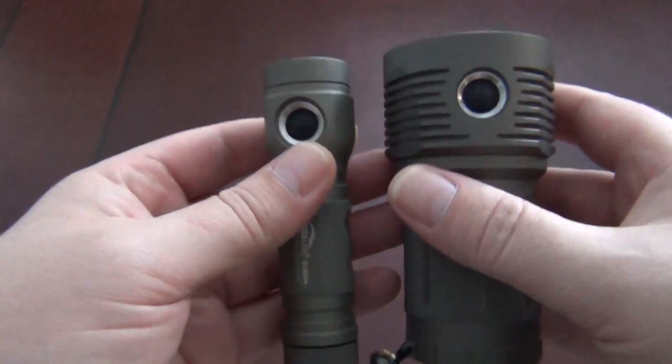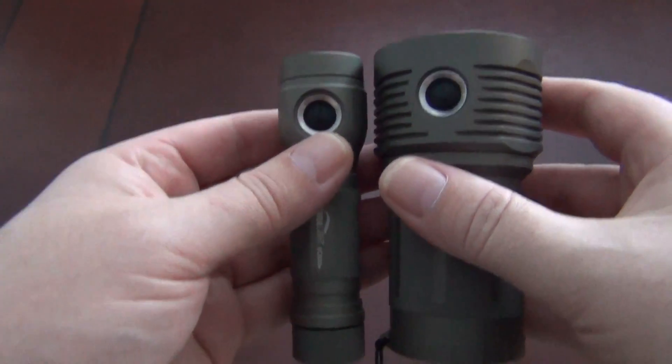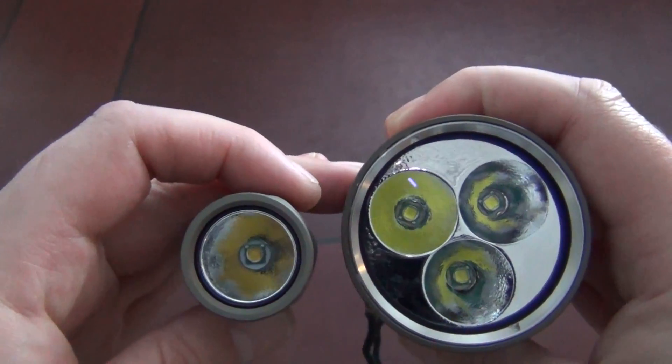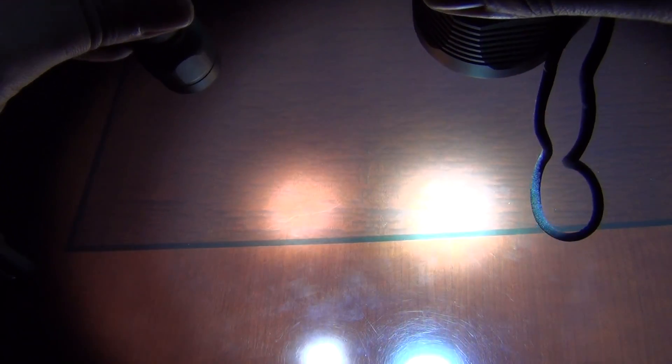Anyway, if we compare the size to the SC600, just about the same height, obviously much bigger around. And there's the SC600 on high. You can see bigger hot spot and definitely much brighter.